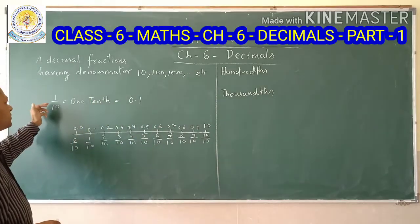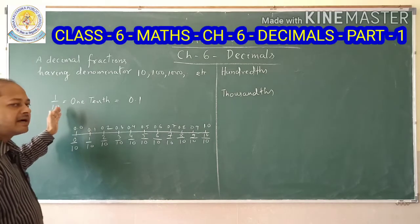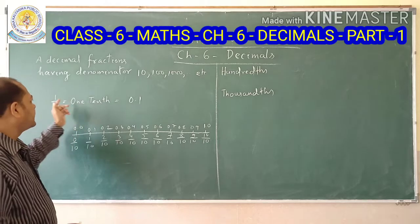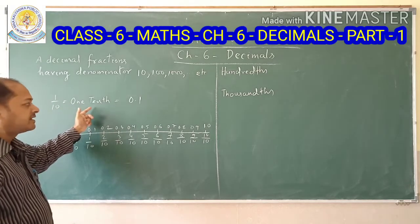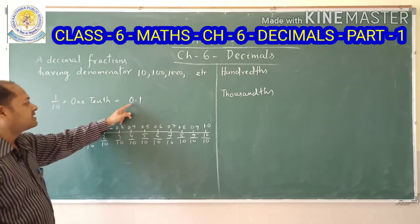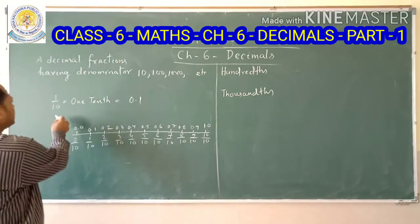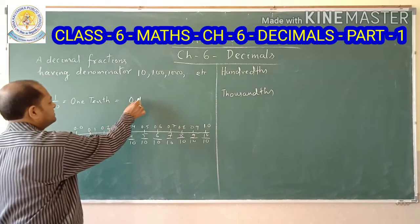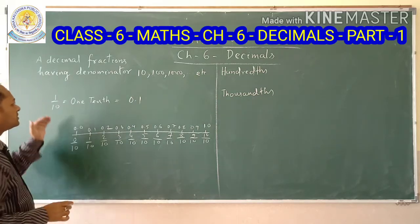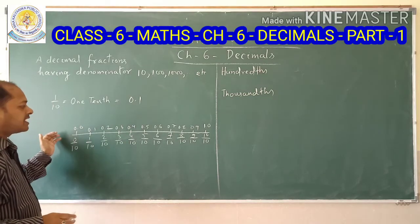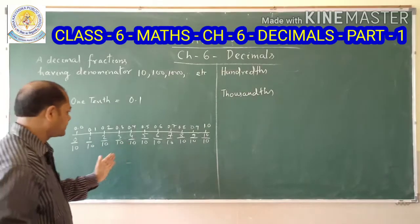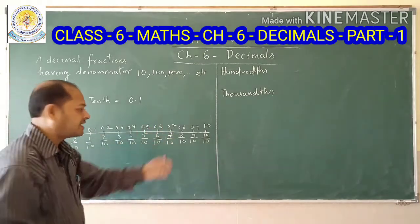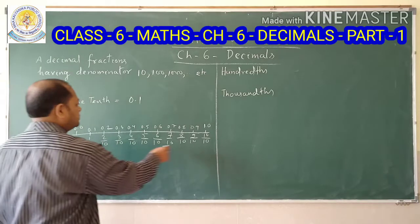So let us see: 1 by 10. 1 by 10 represents the tenth part, meaning one-tenth. You can write 1 by 10 as '1 tenth.' It can also be written in decimal as 0.1. This is because in 10, there is one zero, so after the decimal point there is one place.